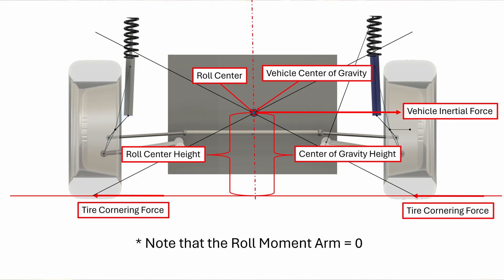To better understand this, imagine if we had a roll center that was at the same height as the center of gravity. Remember, the roll centers define the axis the body rolls around in a corner, like the hinges on a door. So if the inertial forces of the car are pushing directly on the roll axis, there shouldn't be any roll at all. Imagine trying to close a door by pushing right on the hinges — you can't do it. This is the same thing.